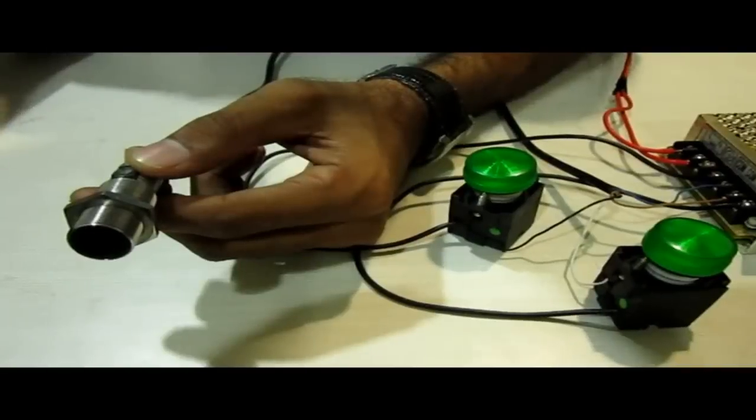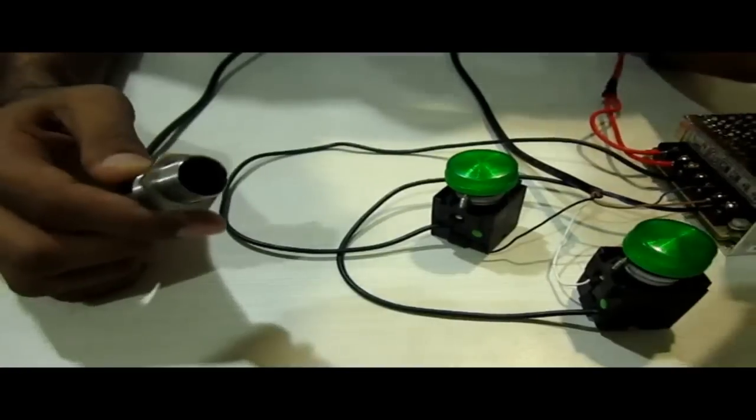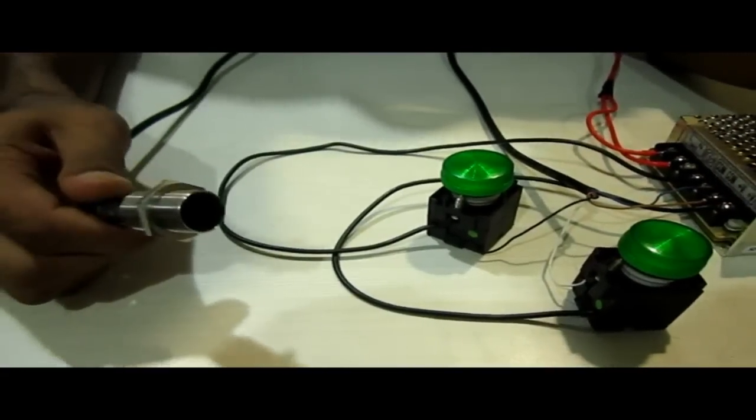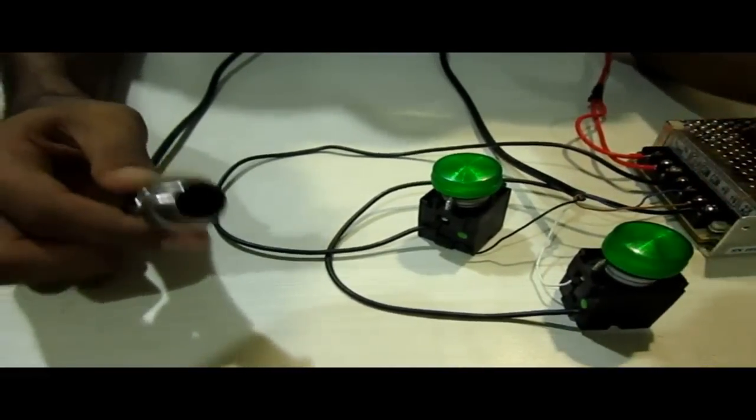These sensors are widely used in industry to detect bottles or any metallic objects because it detects metals as well as non-metals. So that's the basic principle behind the working of the capacitor sensor. In the next video we will show you the application of this capacitor sensor.